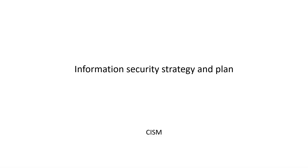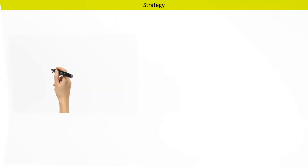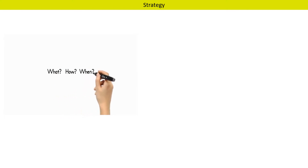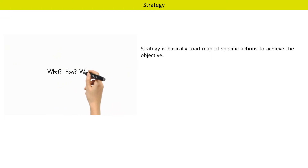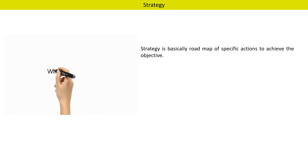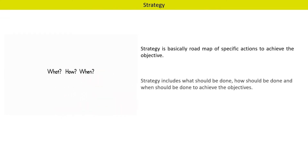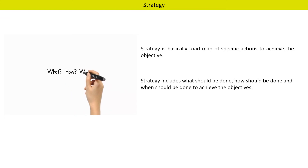In this video, we will discuss information security strategy and plan. Let us first discuss what is a strategy. Strategy is basically a roadmap of specific actions to achieve the objective. Strategy includes what should be done, how should be done, and when should be done to achieve the objectives. So what, how, and when is the strategy.